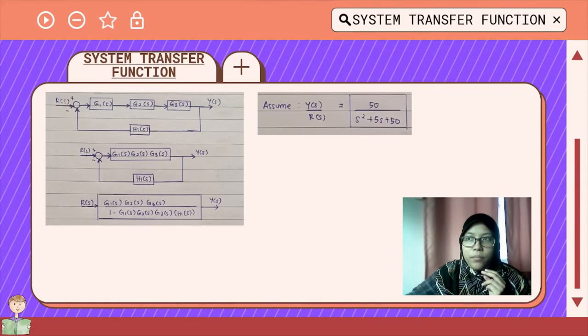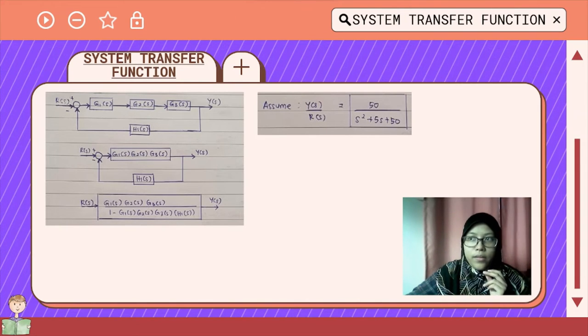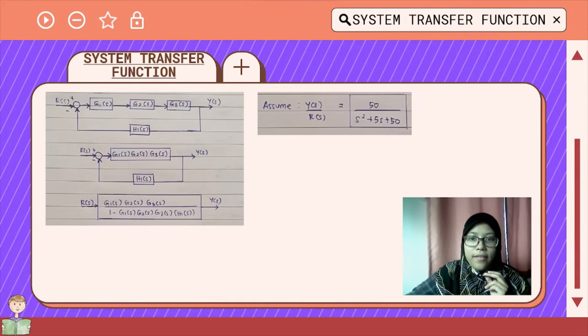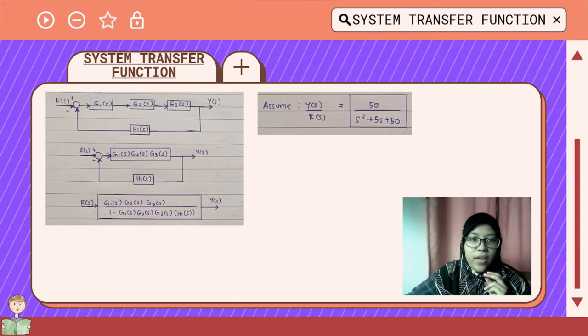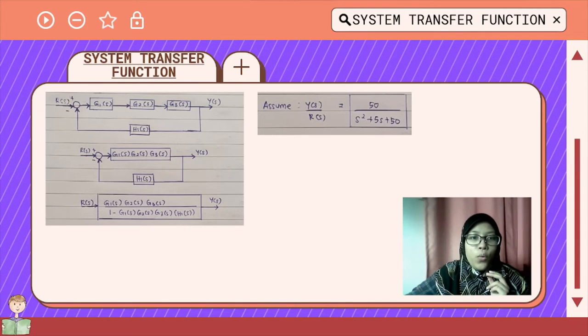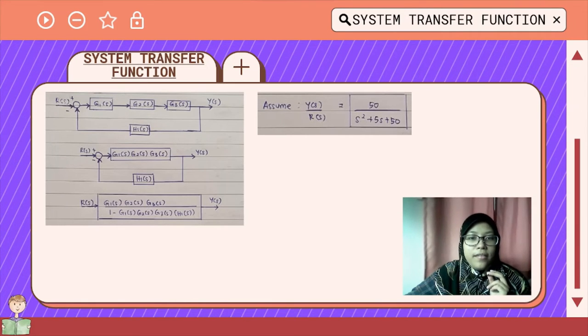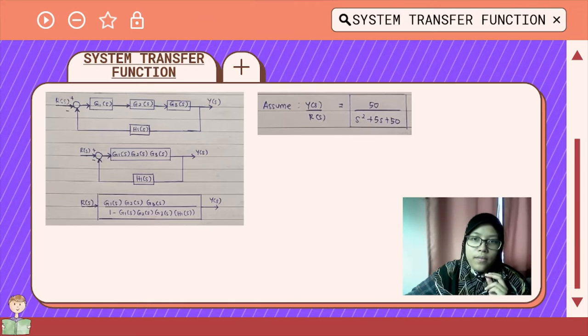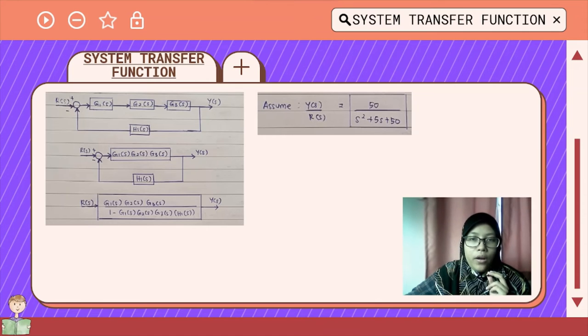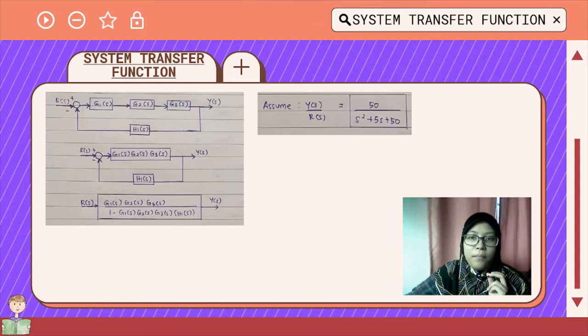The block diagram that we got before has been converted to signal flow so we can understand it better. Then we have to model the system transfer function. The transfer function that we get is G1(s) times G2(s) times G3(s) per 1 minus G1(s) times G2(s) times G3(s) times H1(s). The assumption of the equation for the system transfer function is Y(s) per R(s) equals 50 per s squared plus 5s plus 50.